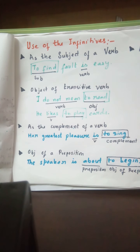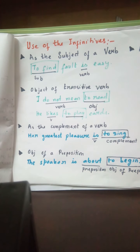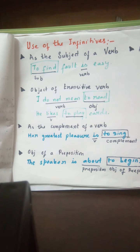Infinitives can also be used as a complement of a verb. When you are not describing an action but rather a state — describing a quality — it is a complement. For example, 'her greatest pleasure is to sing.' Here, 'to sing' describes a quality and acts as a complement. A complement of a verb can never be a verb itself; it has to be a noun. So 'to sing' here is a noun functioning as a complement.